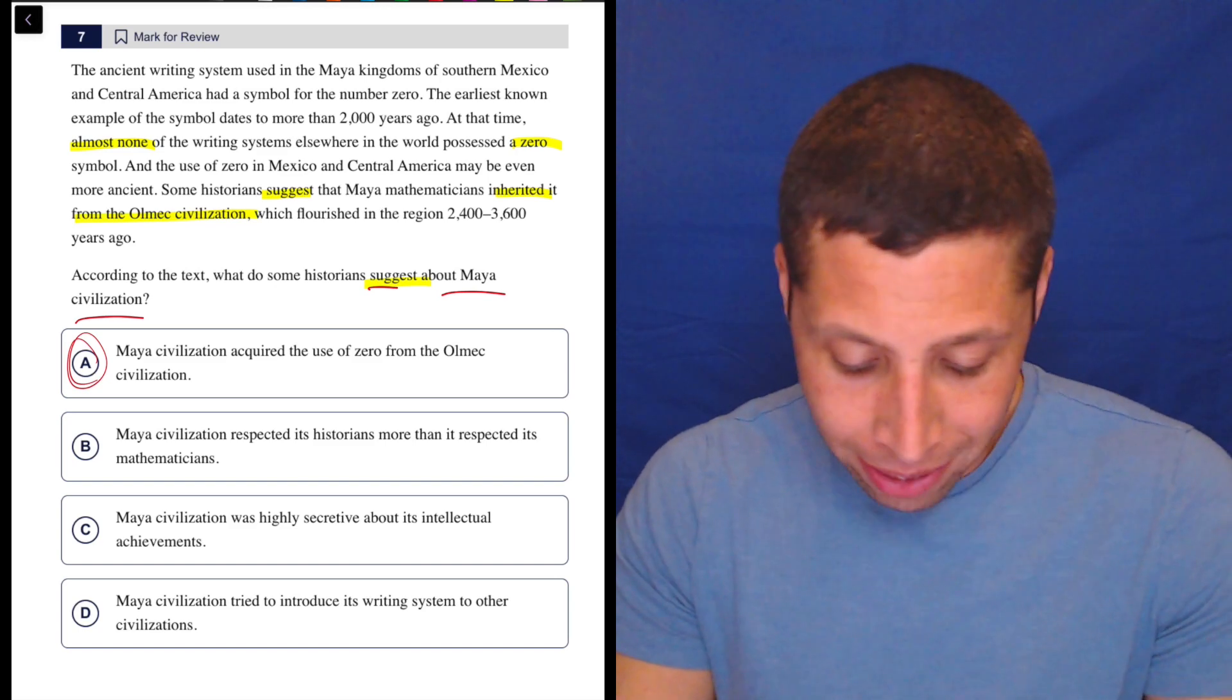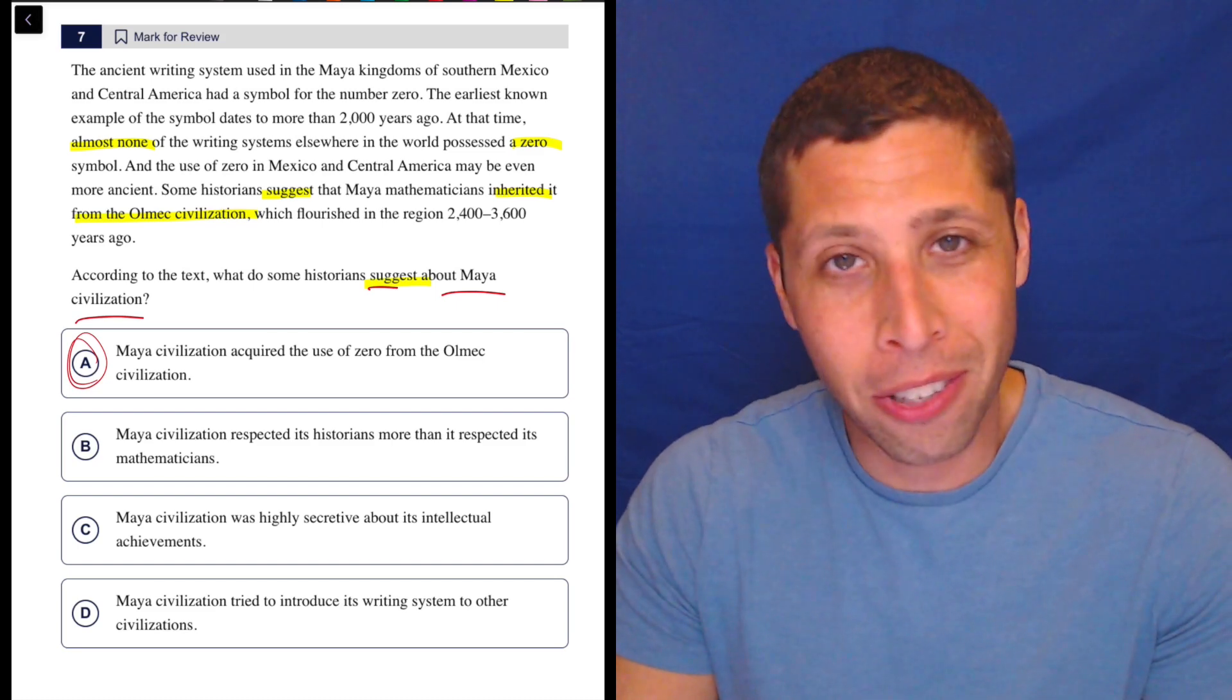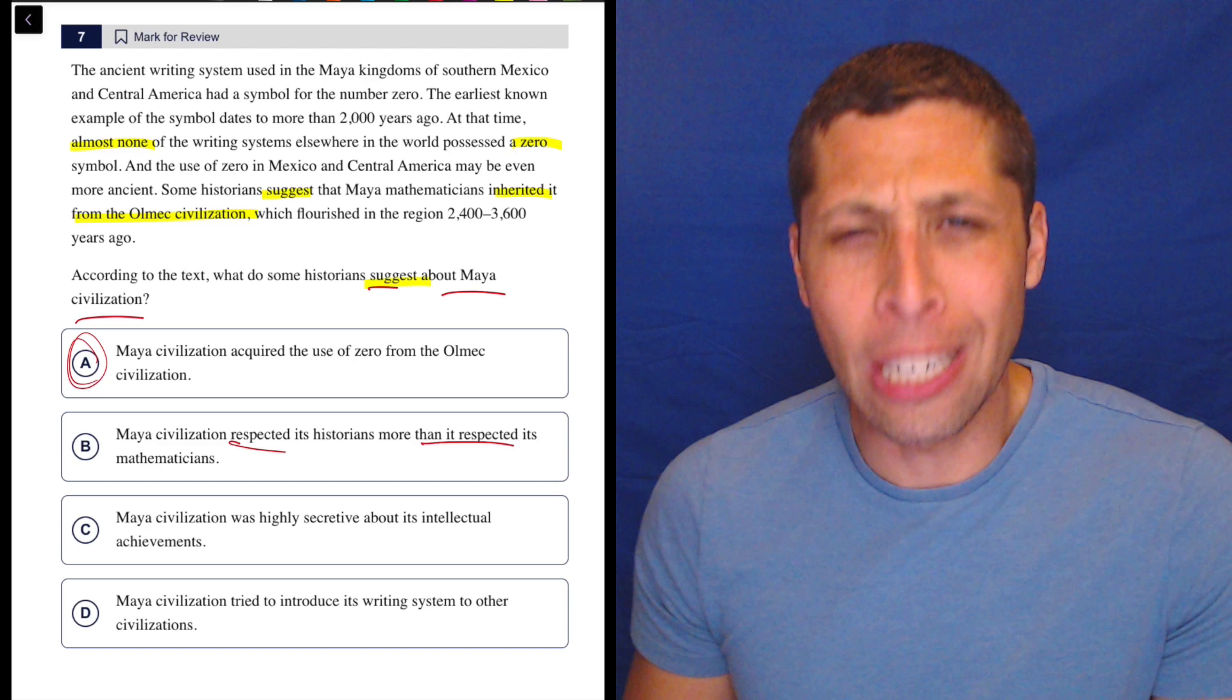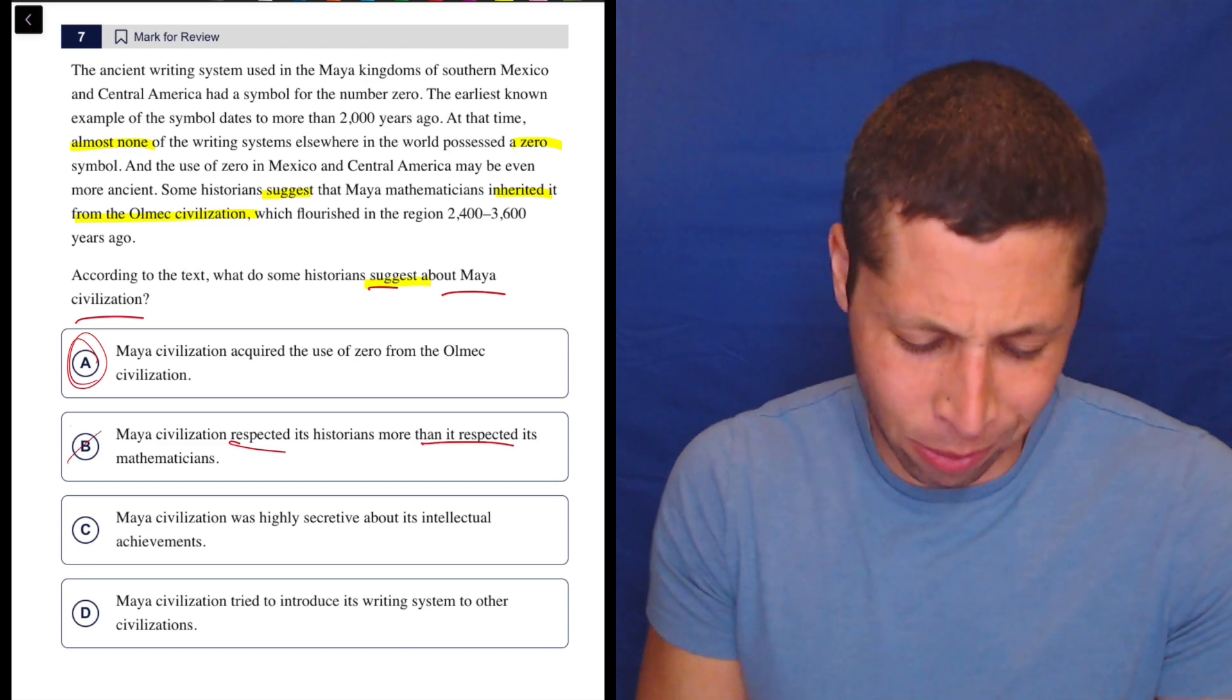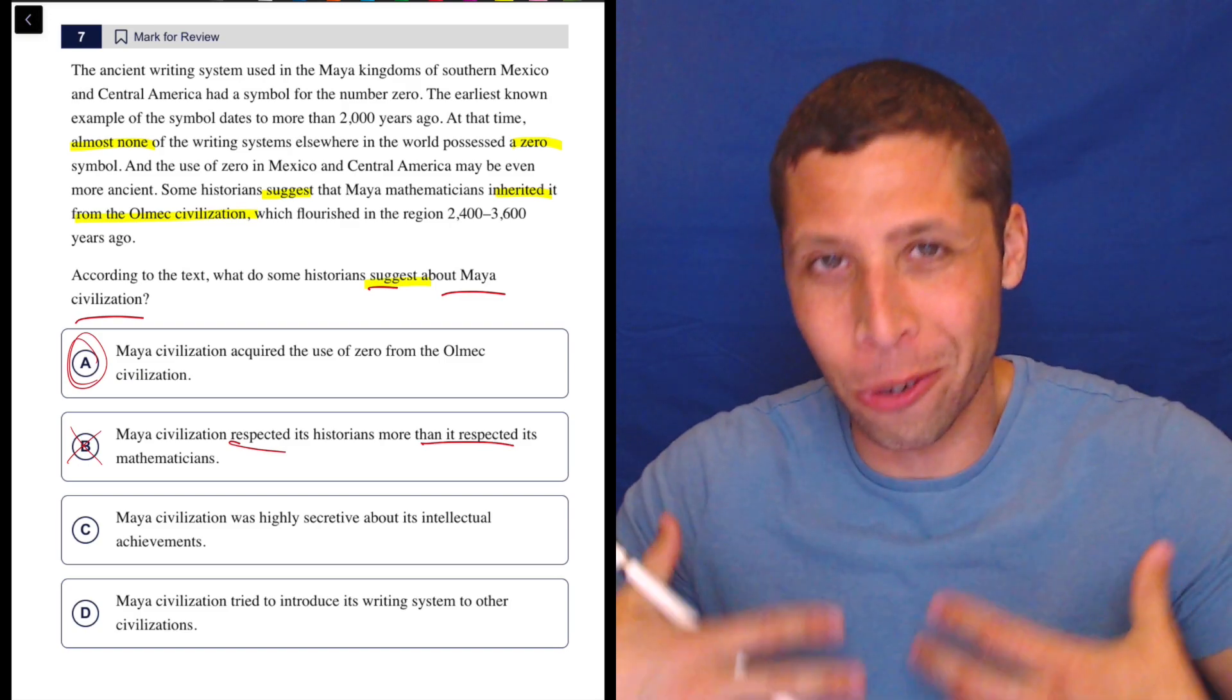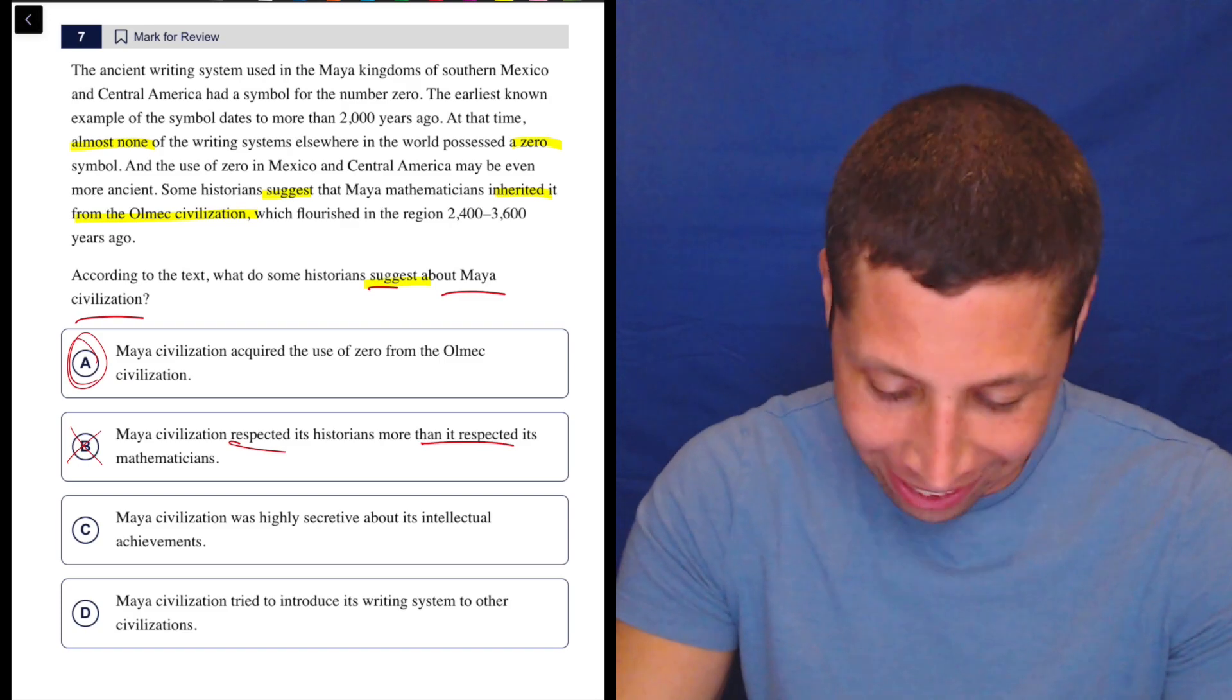Let's look at B. Maya civilization respected its historians more than it respected its mathematicians. What? Respect? It's not about that. It's about zero. I don't know what they respected. We are the historians looking at the Maya. It doesn't even make any chronological sense.